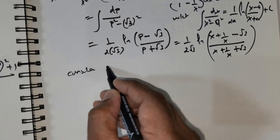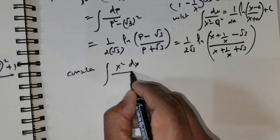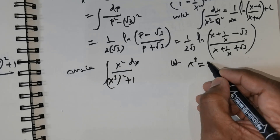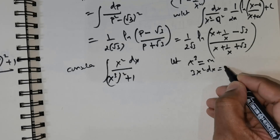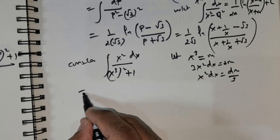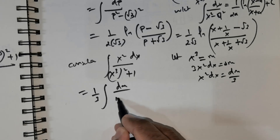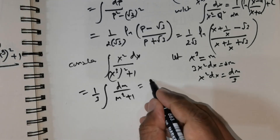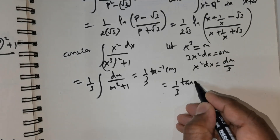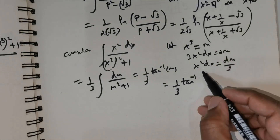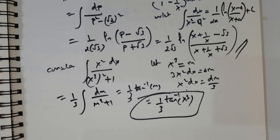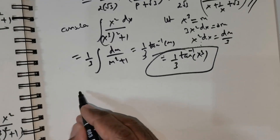Now consider the final term: integral of x squared dx divided by x cubed, all squared, plus 1. Let m equal x cubed, so 3x squared dx equals dm, meaning x squared dx equals dm over 3. Substituting gives 1 over 3 times dm divided by m squared plus 1, which is nothing but 1 over 3 arctan of m, that is 1 over 3 arctan of x cubed.